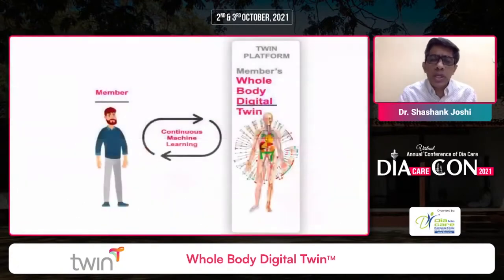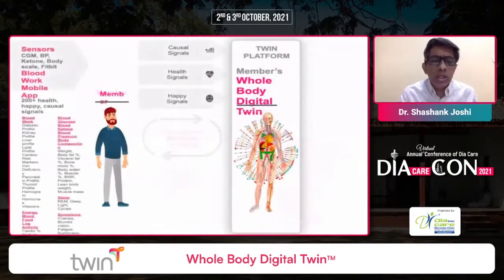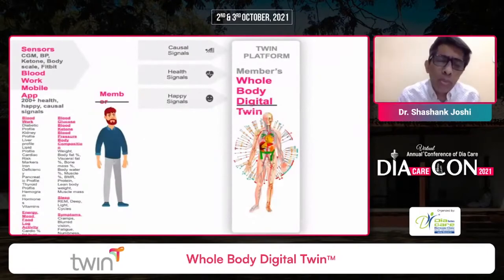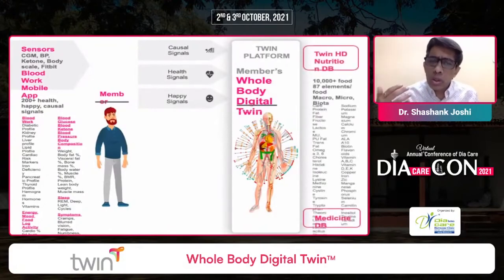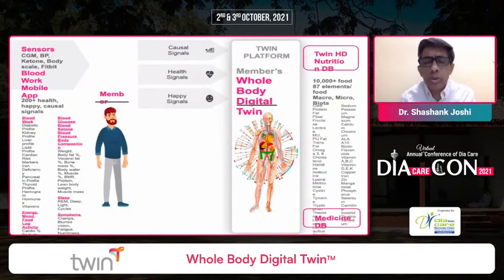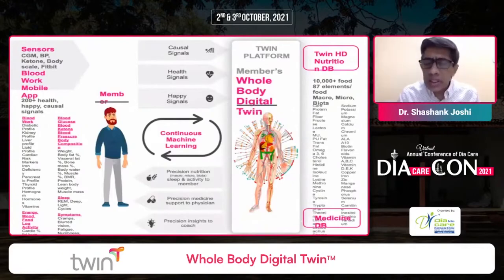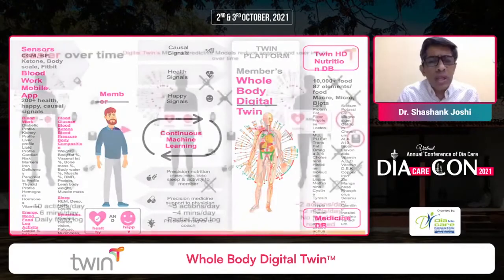This is an evidence-based approach using continuous machine learning with sensors including CGM, blood pressure monitor, ketone sensor, body weight scale, and Fitbit, integrated with all blood parameters measured alongside energy log, mood log, sleep log, and symptom log. Members input signals of health causality. The system also analyzes macronutrient and micronutrient composition as well as microbiota, enabling precise prediction of nutrition and medicine.